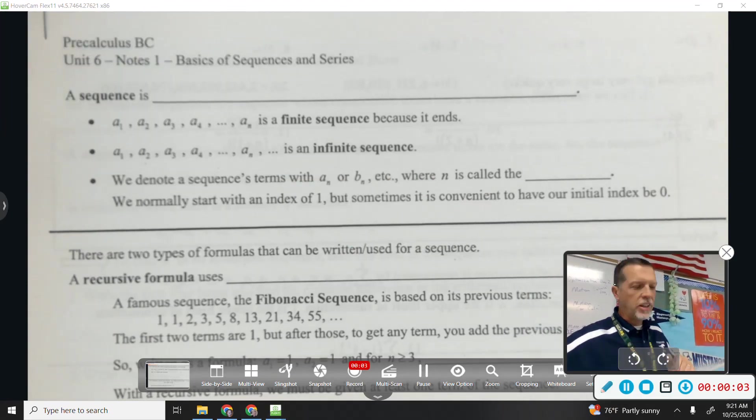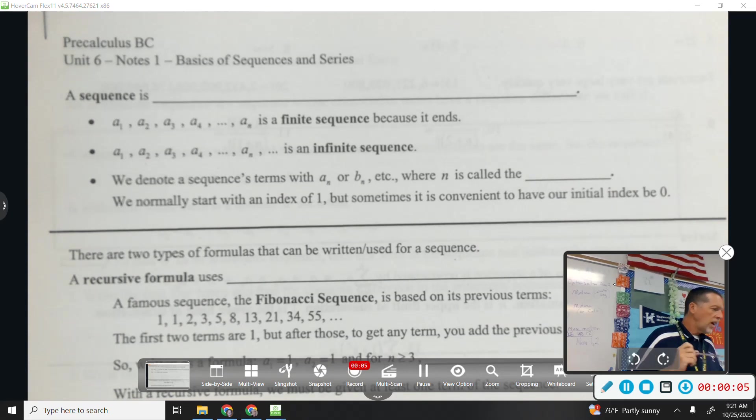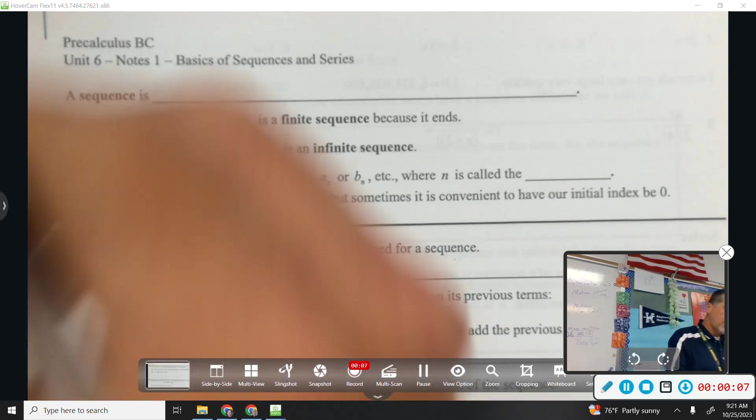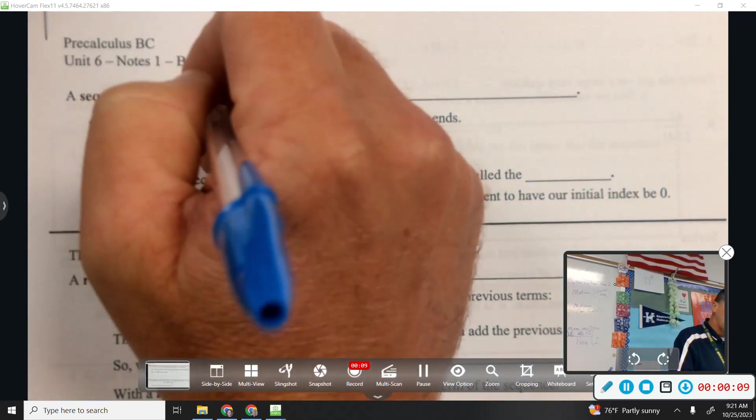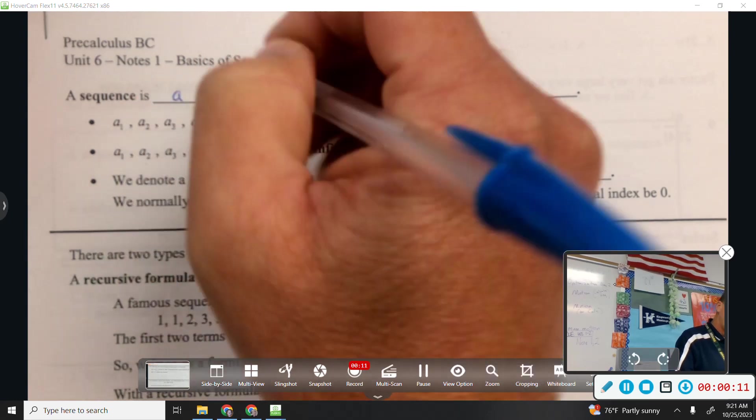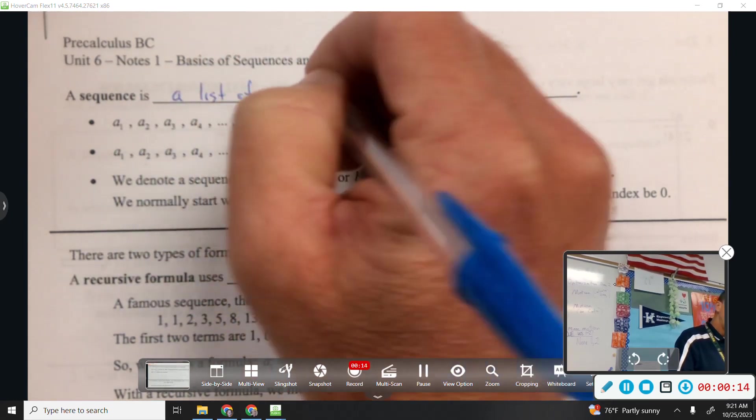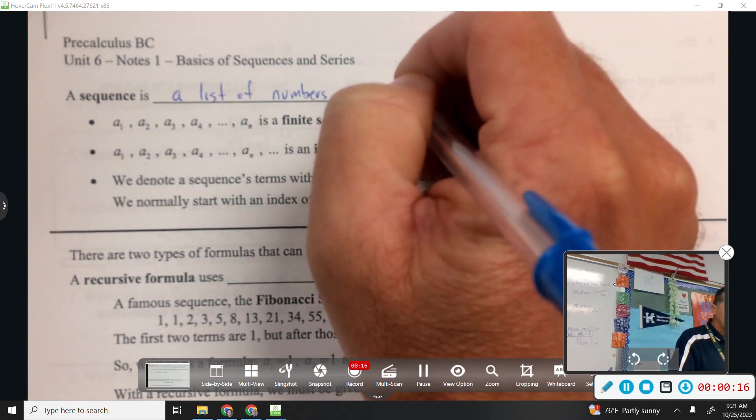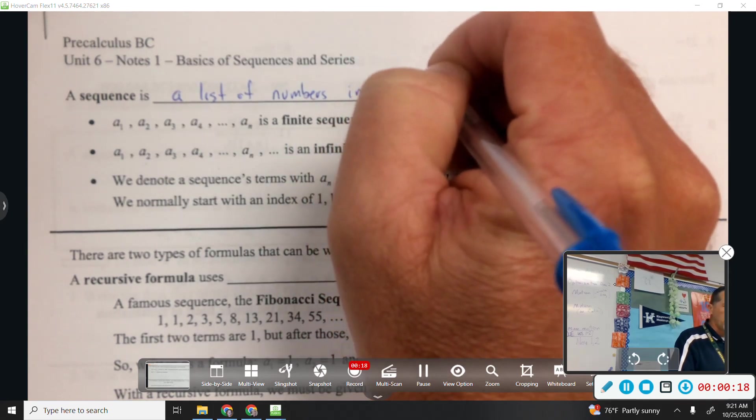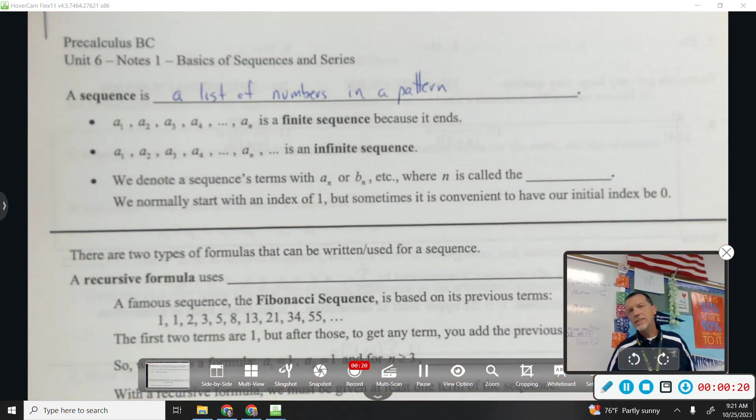So, basics of sequences and series. A sequence is a list of numbers in a pattern. It's not a random list of numbers. There's some pattern to the list. Sometimes the pattern's easy, and sometimes the pattern's hard. If it's a certain type of pattern, we have certain names. But just big picture, a sequence is a list of numbers that has a pattern.